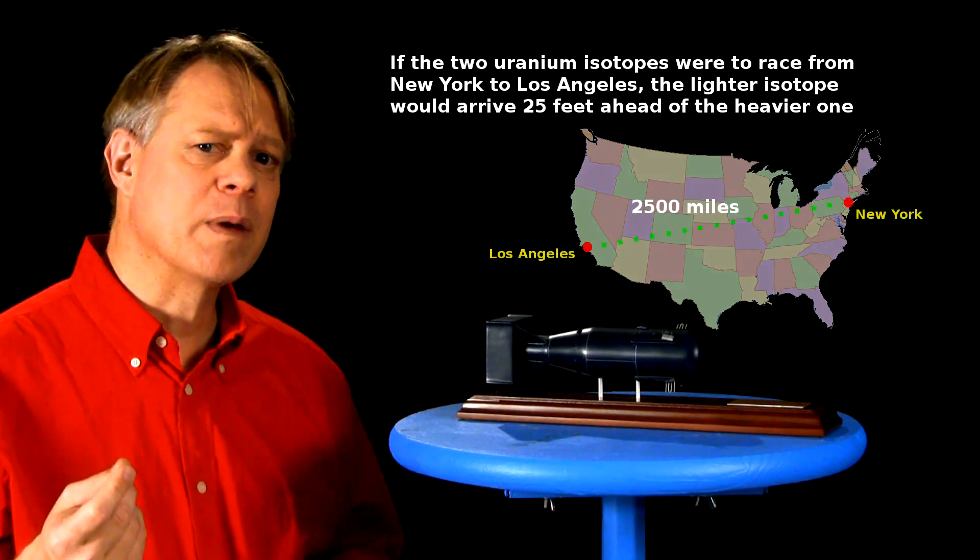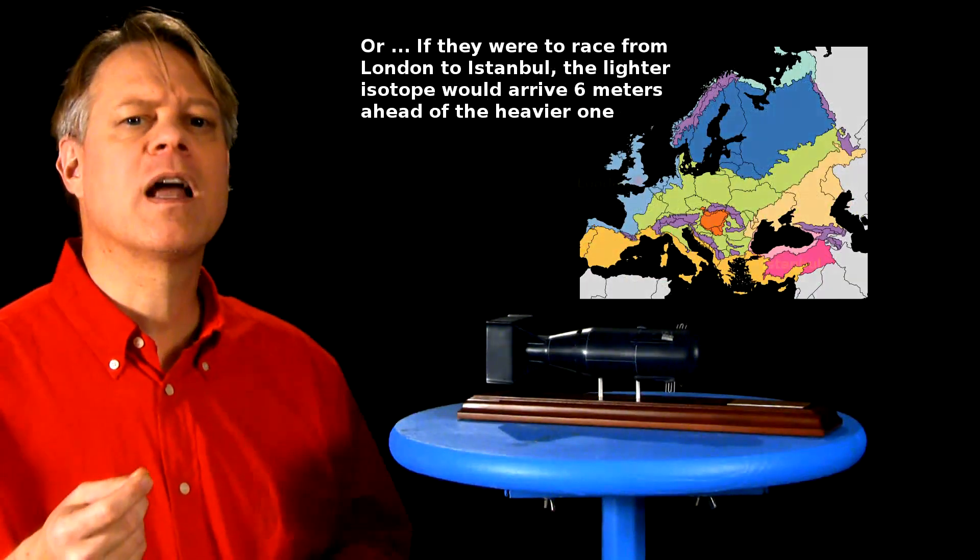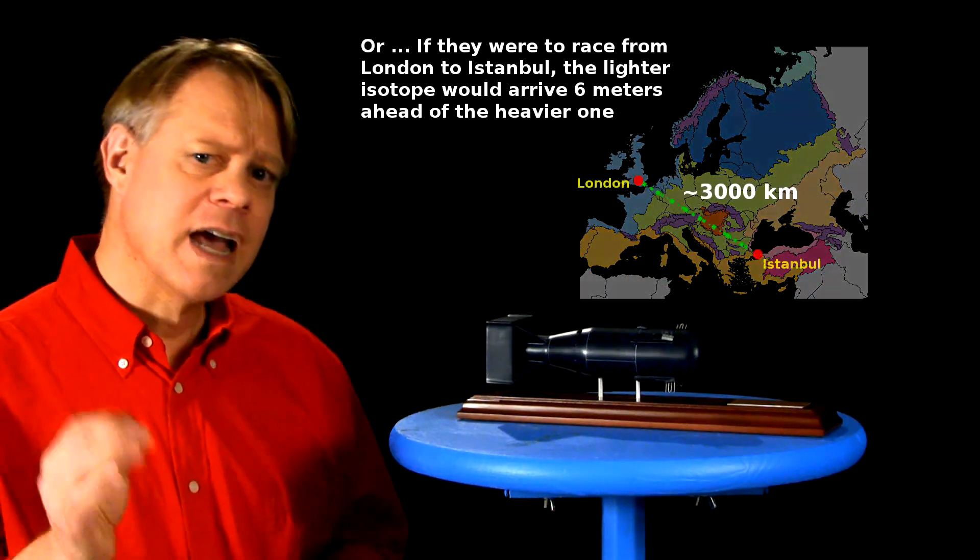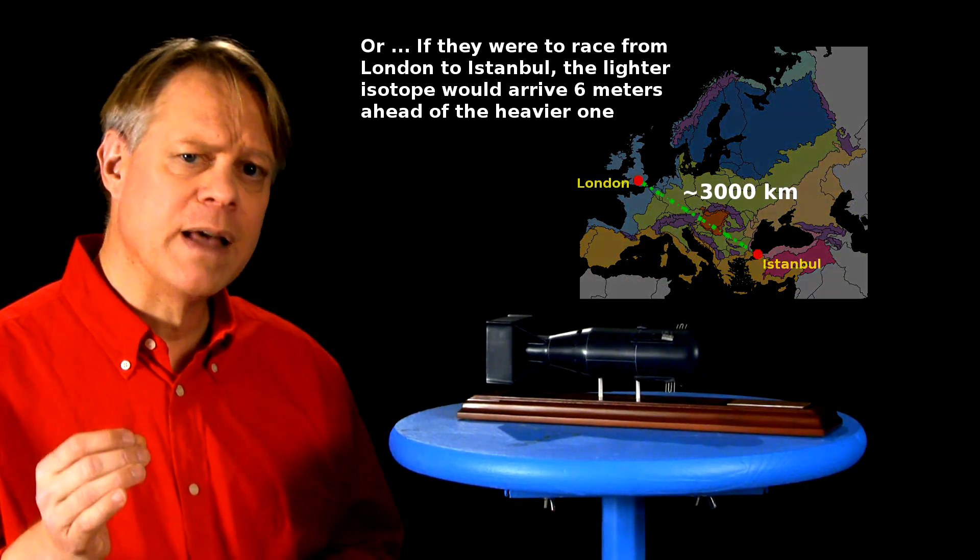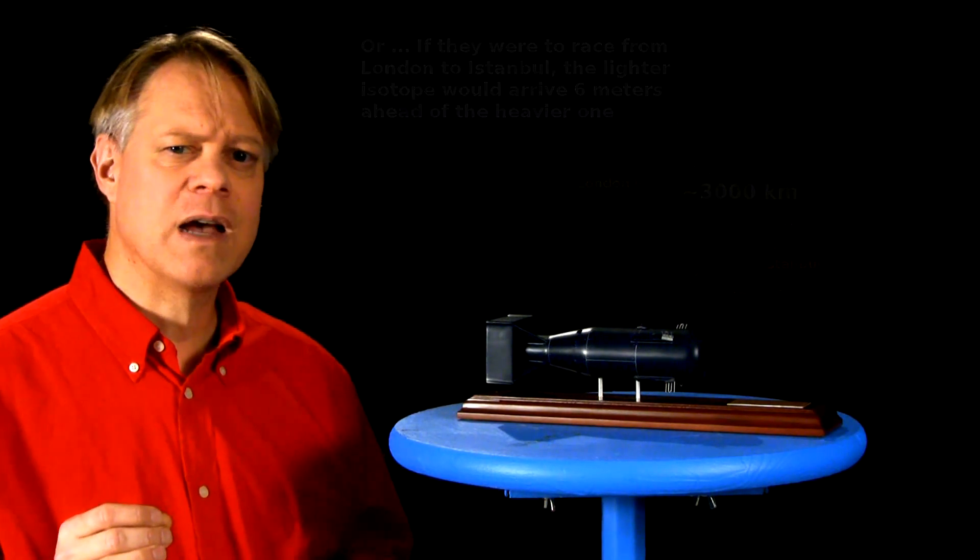To enrich uranium for the first atomic bomb, engineers built immense gaseous diffusion plants that capitalized on the differing speeds. A gas containing uranium flows through miles of piping in a kind of race where the lighter U-235 wins out.